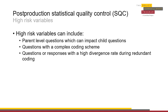When creating the sample, the statistician should meet with the project supervisor to discuss whether weighing variables makes sense for that particular dataset. For example, if the supervisor found that certain variables were leading to high divergence rates throughout the redundant coding, she may decide to weigh those variables more heavily in SQC. If so, the project supervisor should indicate which variables are high risk, and discuss how heavily each variable should be weighed in the sample.